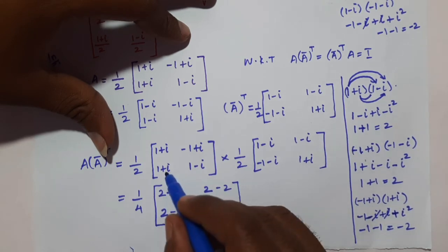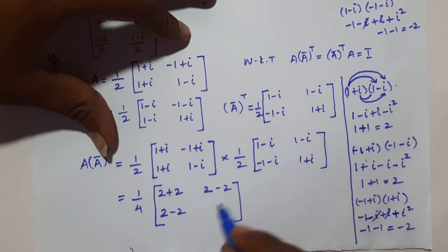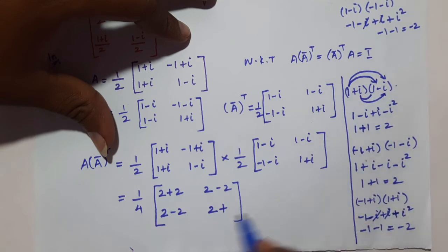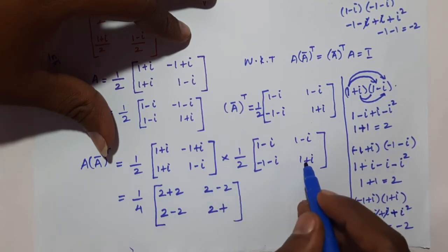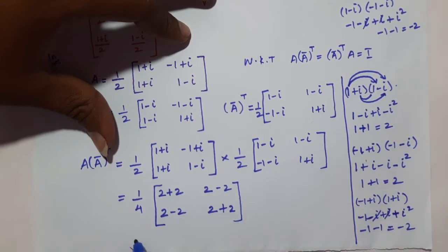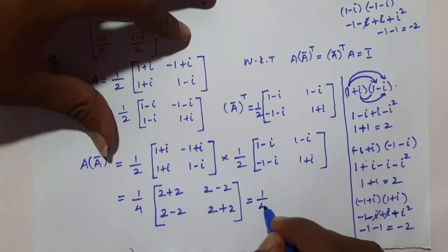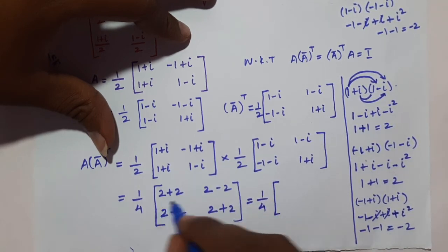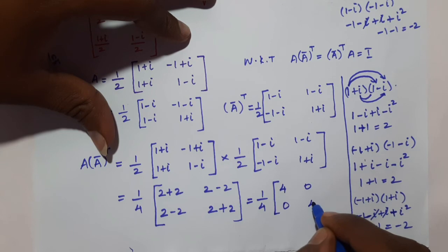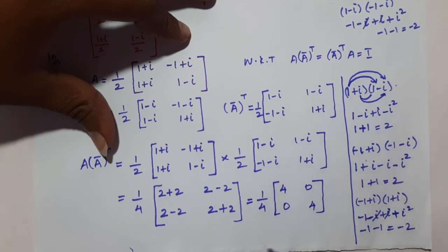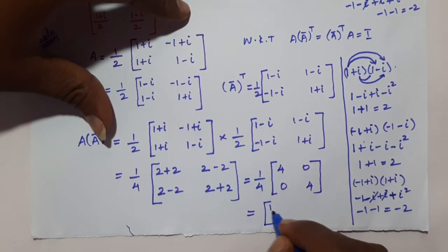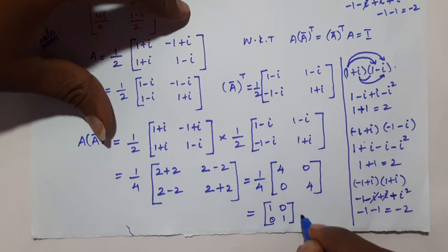For element (2,2): (1+i)(1-i) and (1-i)(-1-i) — we already know (1+i)(1-i) = 2. So this element is also 2. Therefore 1/4 times [[4, 0], [0, 4]] equals [[1, 0], [0, 1]], which is the identity matrix I.